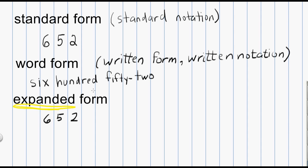To convert to expanded form, I'm going to go to the highest place. The digit in the highest place is a 6, and when it's located in that place, its value is not 6 — it's 600. So we'll write 600. Now we go to the next digit in the next highest place, which is the 5. The 5, when it's in the tens place, its value is not 5 — it's 50. So we're going to add 50 to the 600.